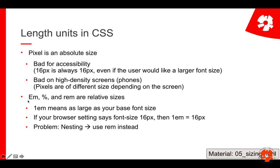What you can do instead is use relative sizes. For example, em is simply the unit of the base font size. So if the user sets the default font size to 16 pixels, then 1em is exactly 16 pixels. But if the user changes it to 32 because they can't read so well, then suddenly 1em is 32 pixels. So it basically means you adapt to the user. Also if the browser setting on a phone is different, then this automatically changes.